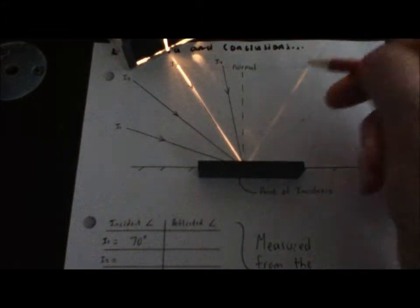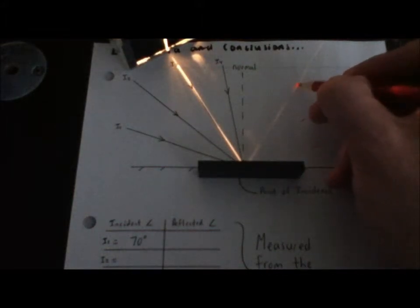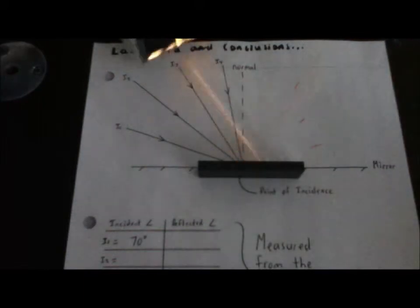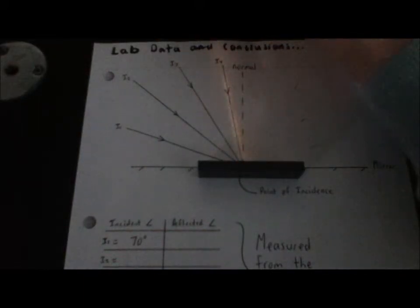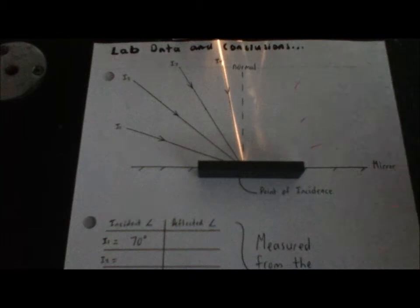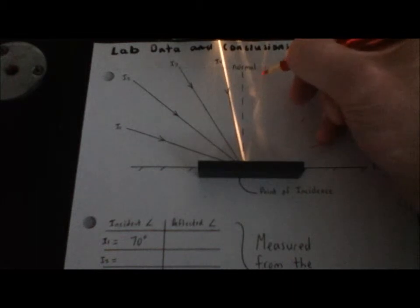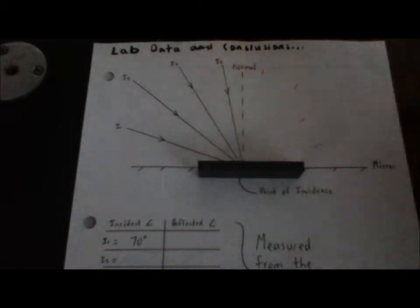Again, you can see light coming out there, and we lightly trace out where the reflected ray's coming. For the last light ray, we see that and get a reflected light ray right there, and we lightly draw that one.